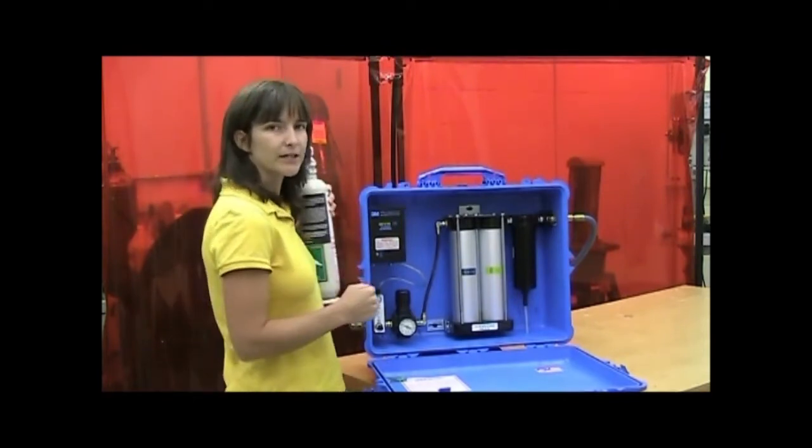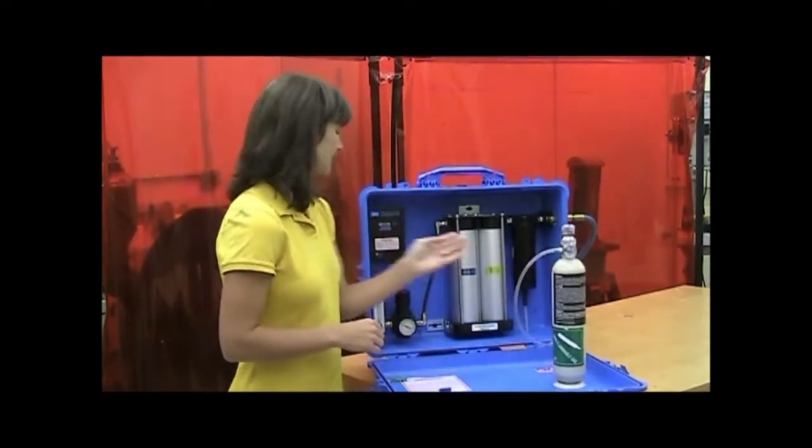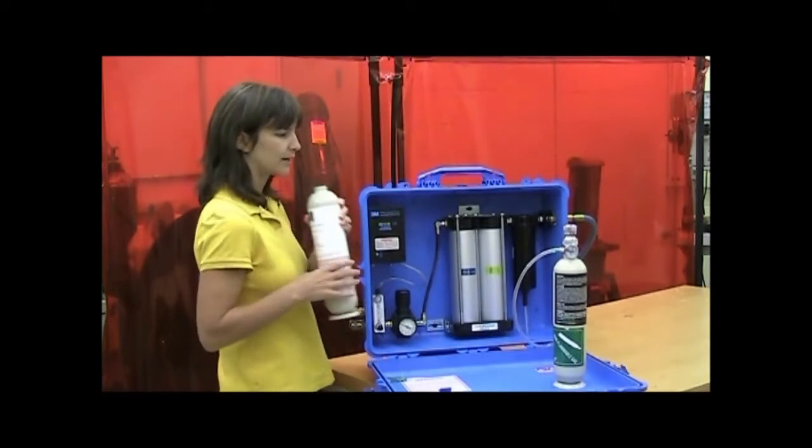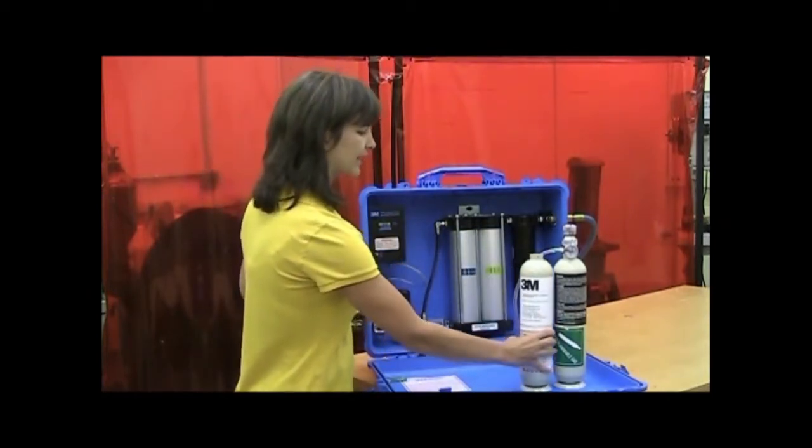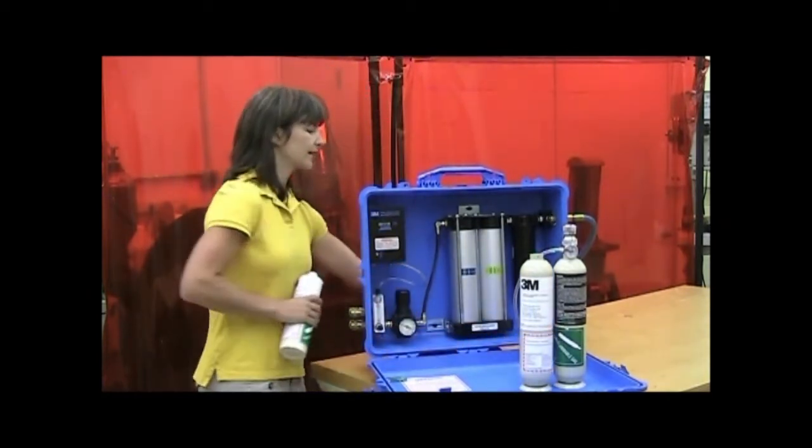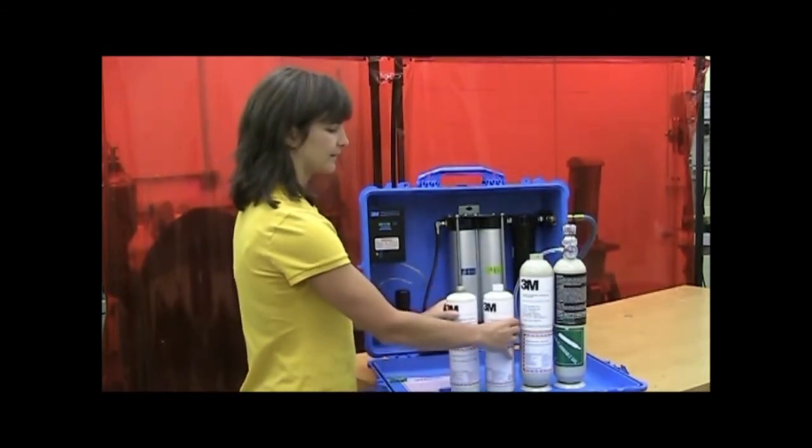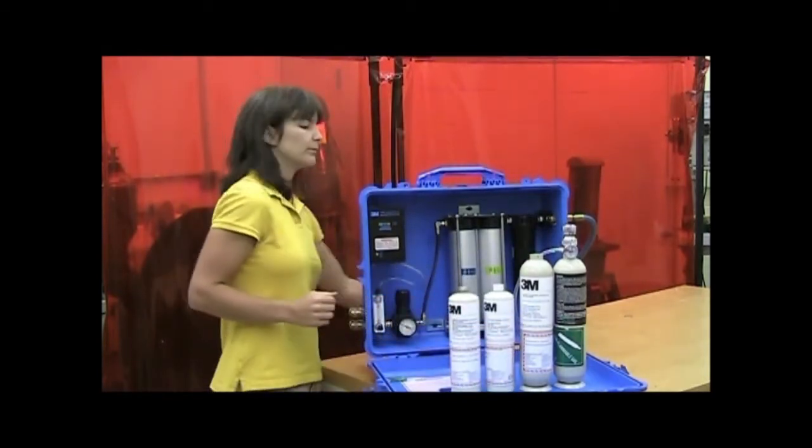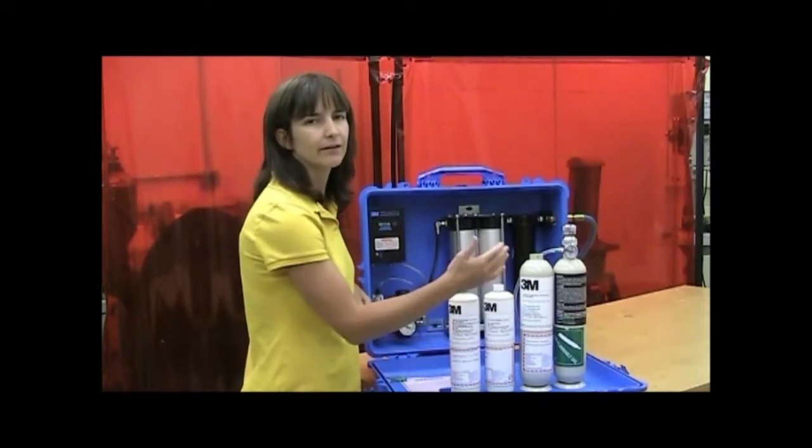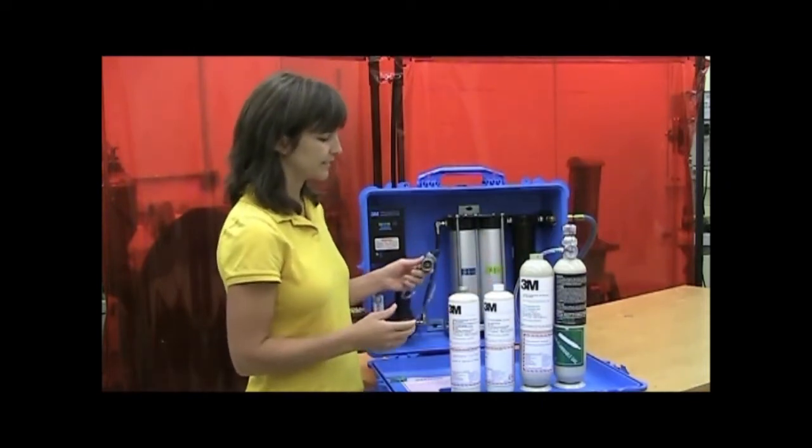3M sells two different calibration kits: a large kit and a small kit. The large kit has bottles that are 103 liters. The small kit bottles are 17 liters. So aside from being able to get more calibrations out of the larger kit, the difference really is in the regulator.